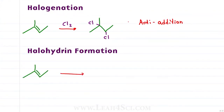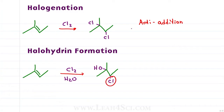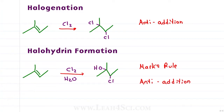Halohydrin formation looks like a halogenation except that the reaction takes place in a polar protic solvent — for example water — so that we get one halogen and one OH adding to the molecule. The halogen adds to the less substituted carbon and the hydroxide to the more substituted carbon, following Markovnikov's rule, but they add opposite to each other for an anti-addition reaction.